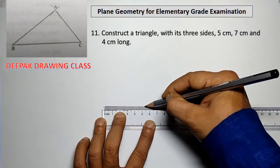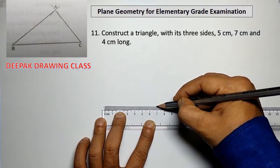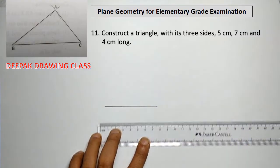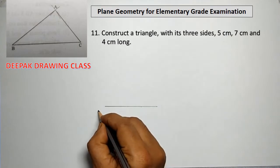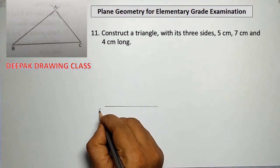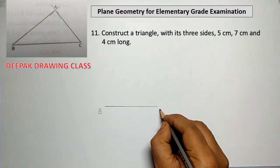Our eleventh construction is how to construct a triangle with the help of its three sides being given.